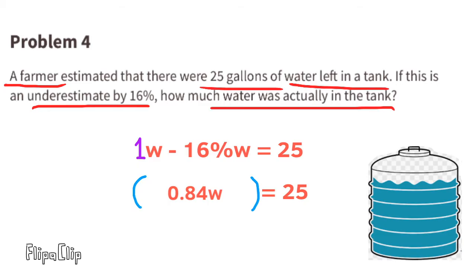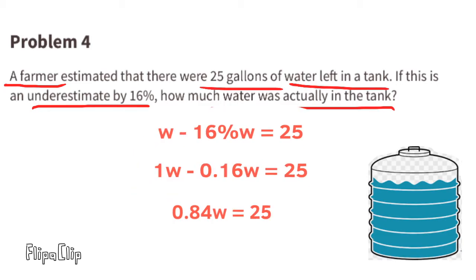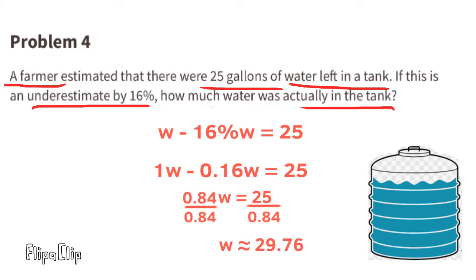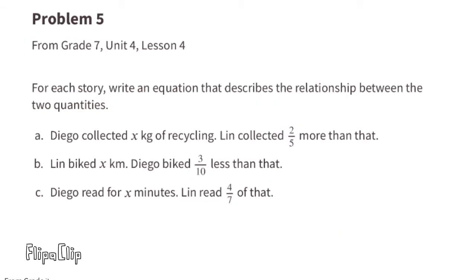1w minus 0.16w is the same as 100 hundredths minus 16 hundredths, which is 84 hundredths. So 0.84w equals 25. Dividing both sides by 0.84, we get w equals 25 divided by 0.84, which is approximately 29.76. There were approximately 29.76 gallons of water in the tank.